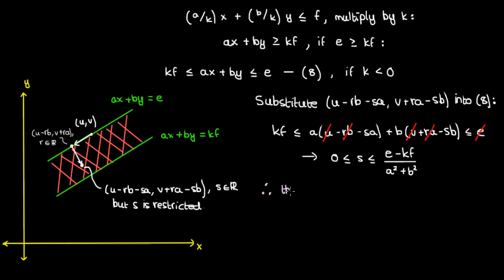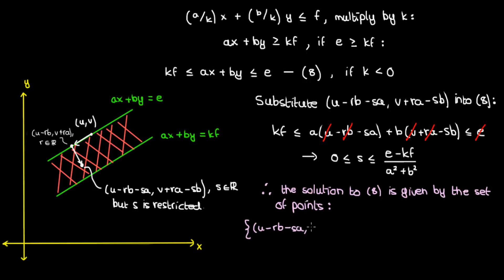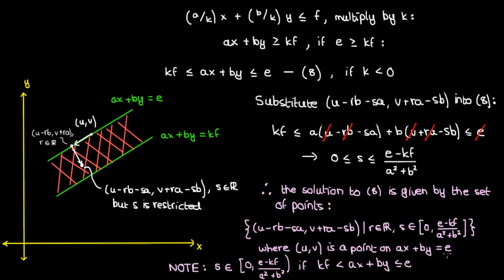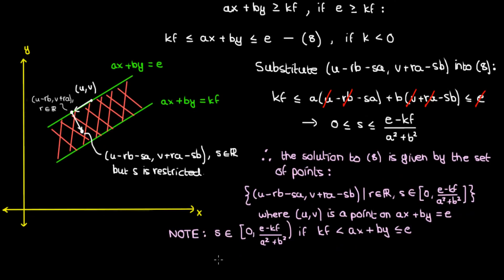So the solution to the system of parallel linear inequalities for the k negative case is the set of points u minus r·b minus s·a comma v plus r·a minus s·v, where r is a real number and s belongs to the closed interval from zero to (e minus k·f) over (a squared plus b squared). If the inequality on the left is strict, the restriction on s will not include the right endpoint; if the inequality on the right is strict, the restriction on s will not include zero.